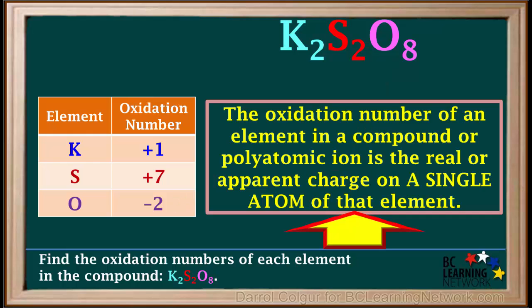Remember, the oxidation number of an element in a compound or polyatomic ion is the real or apparent charge on a single atom of that element.